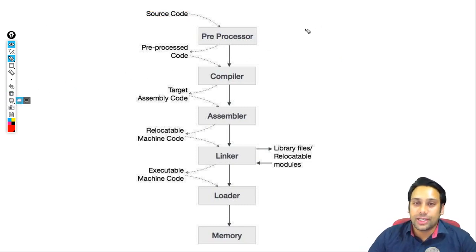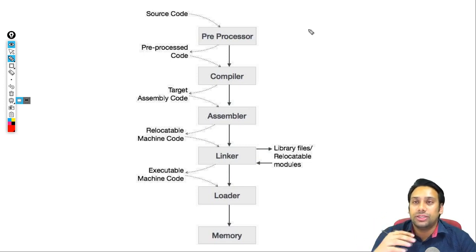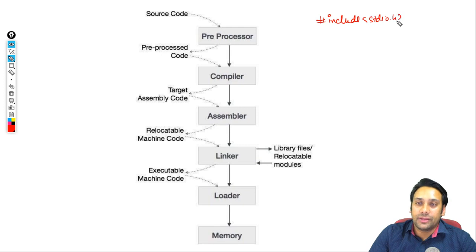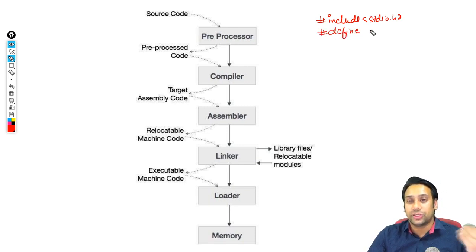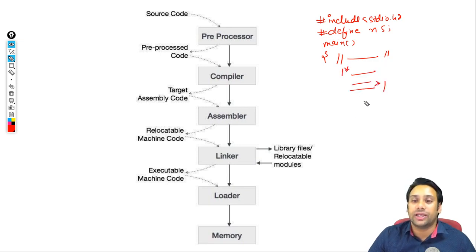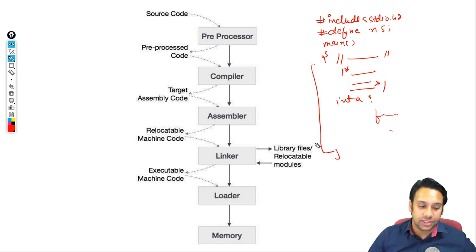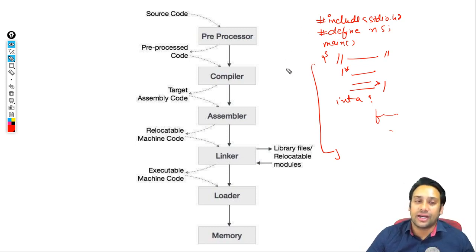When we write a program, we add indentation, comments — single line and multi-line — and extra new lines so the reader can understand what the program is doing. For example, after a hash include stdio.h header file, we give an extra new line just for readability. We can write a main function with comments, indentation, a for loop, and so on. But these things are just for human understanding — the computer system does not need them.